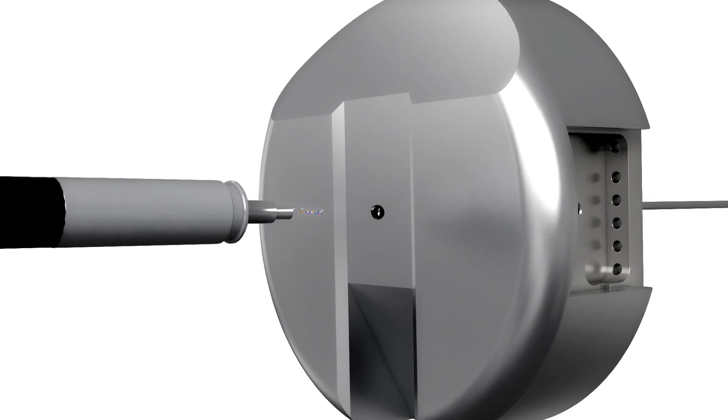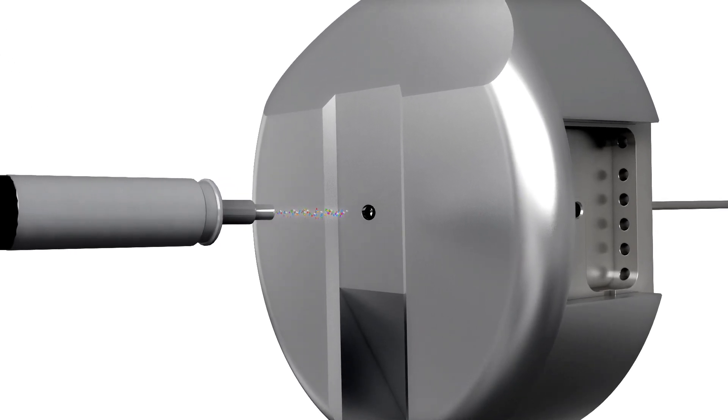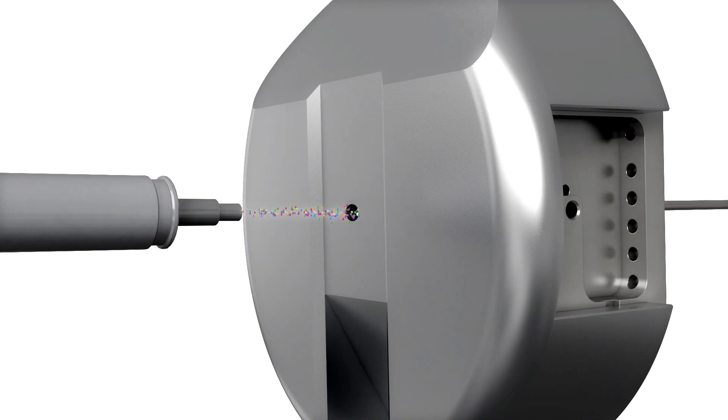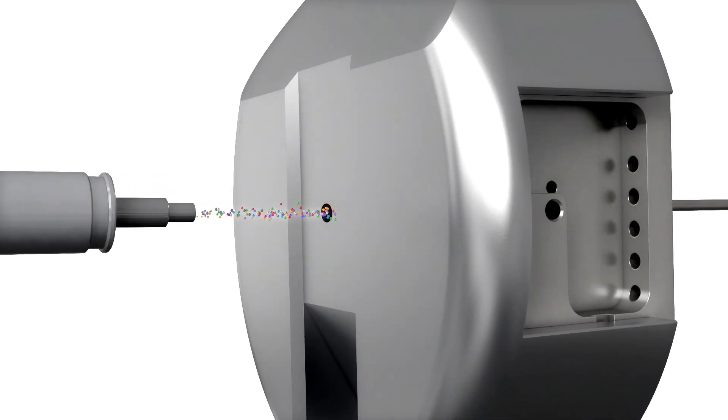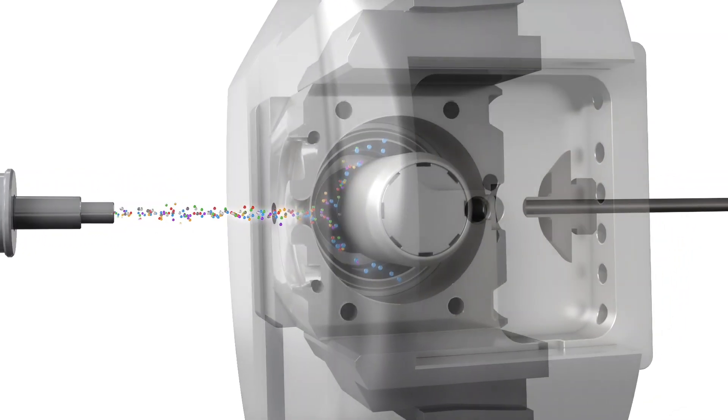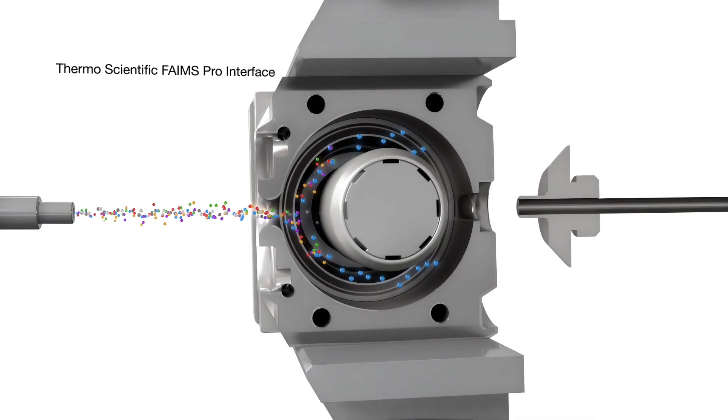FAIMS, High Field Asymmetric Ion Mobility Spectrometry, is an atmospheric pressure differential ion mobility technique that spatially separates ions according to their behavior in strong and weak electric fields.